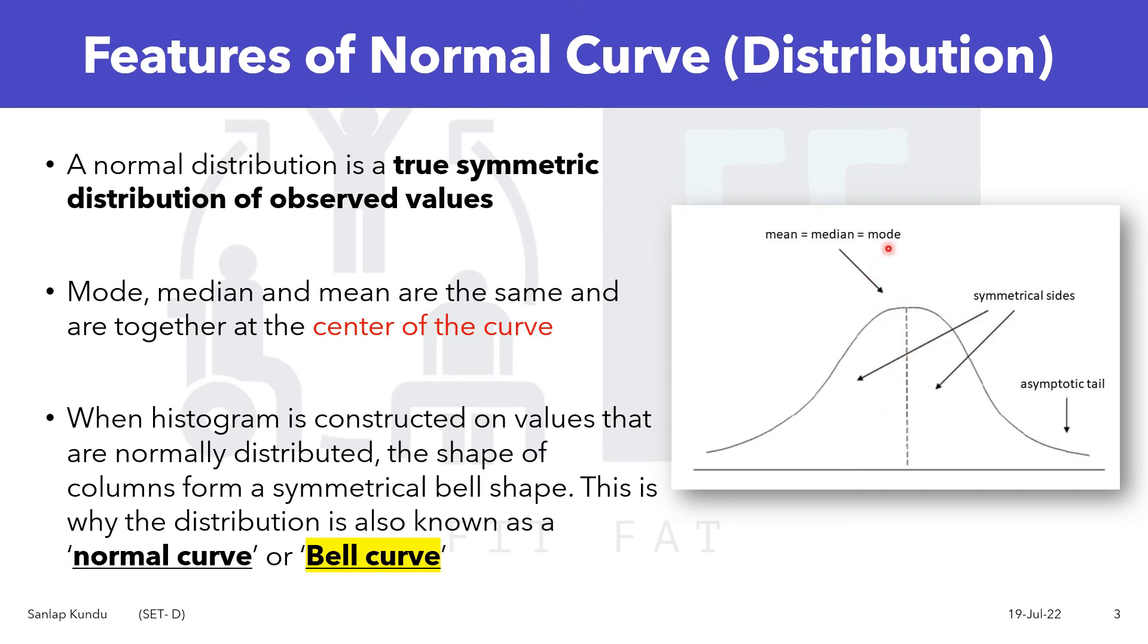More extreme values on either side of the center become less rare as the distance from the center increases. This is also called the empirical rule or three sigma rule.